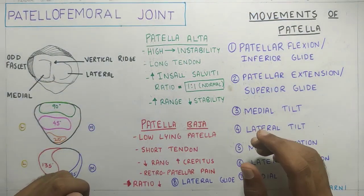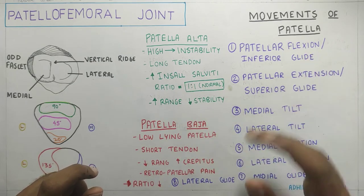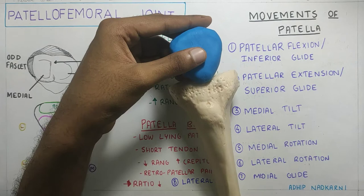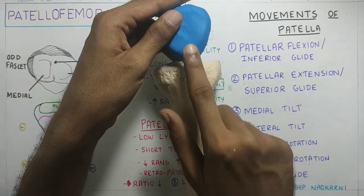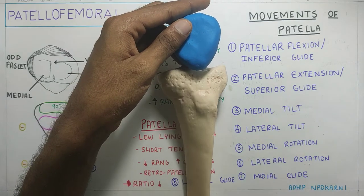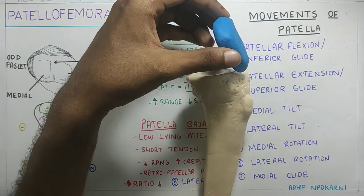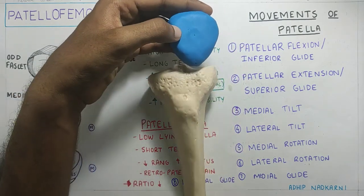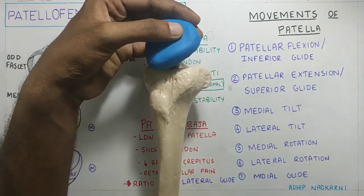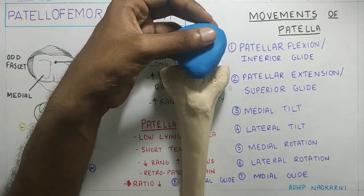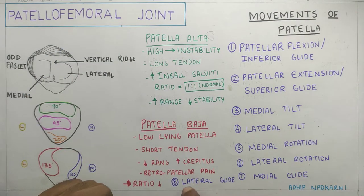This rotation occurs when the inferior pole of the patella moves along with the tibia. The patella is attached to the tibial tuberosity by the patellar tendon. When the tibia rotates laterally, the patella moves along with it causing lateral rotation. When the tibia moves medially, the pole of the patella follows, causing medial rotation of the patella.